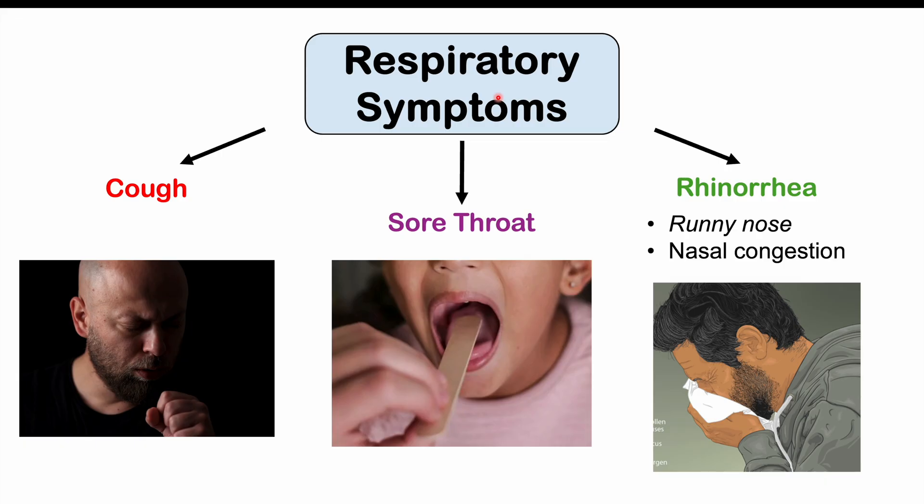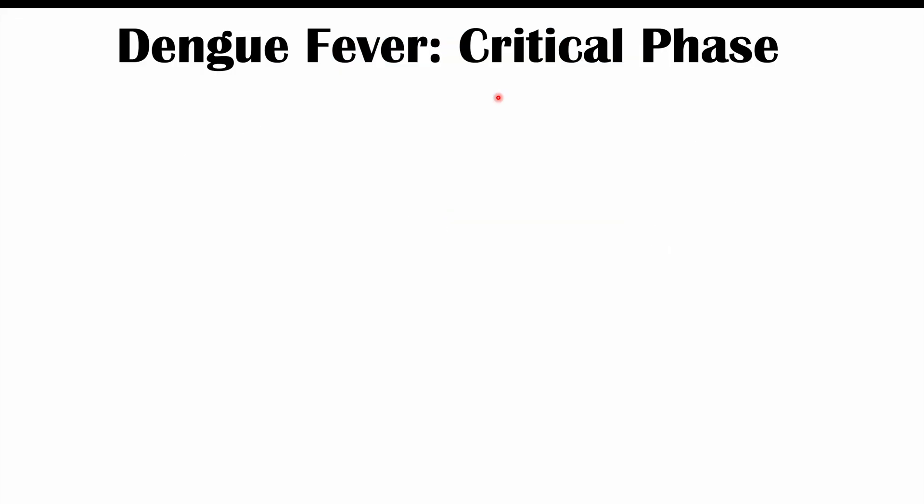All these symptoms occur in the febrile phase, which lasts about four days. If patients end up having a more severe clinical presentation, they can enter into the critical phase, which occurs after defervescence — after the fever has resolved. The critical phase is more likely to occur in those who've had a previous dengue infection, especially with a different serotype. If the primary infection was within 18 months of the second infection, or if the patient has other comorbidities, they are also at greater risk for this severe presentation.